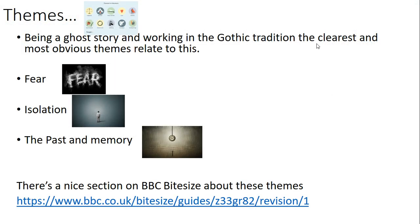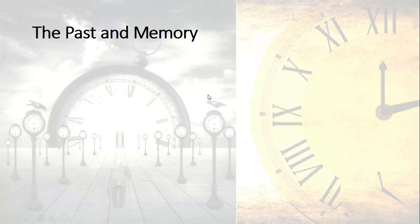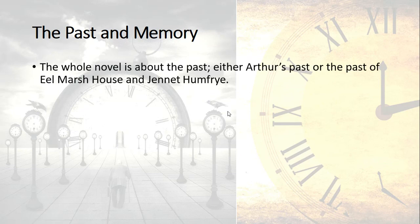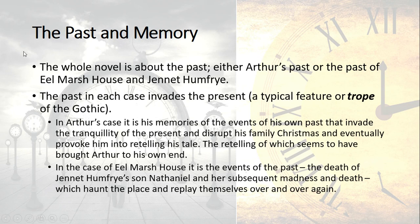We're going to start with the themes. Because it is a ghost story working within the gothic tradition, the clearest and most obvious themes relate to that: the idea of fear, isolation, and the idea of the past. There's a nice section on BBC Bitesize about that. Let's start in reverse order with the past and memory — this is very important to the gothic tradition. The whole novel is really about the past, either Arthur's past or the past of Eel Marsh House and Jeanette Humphrey.